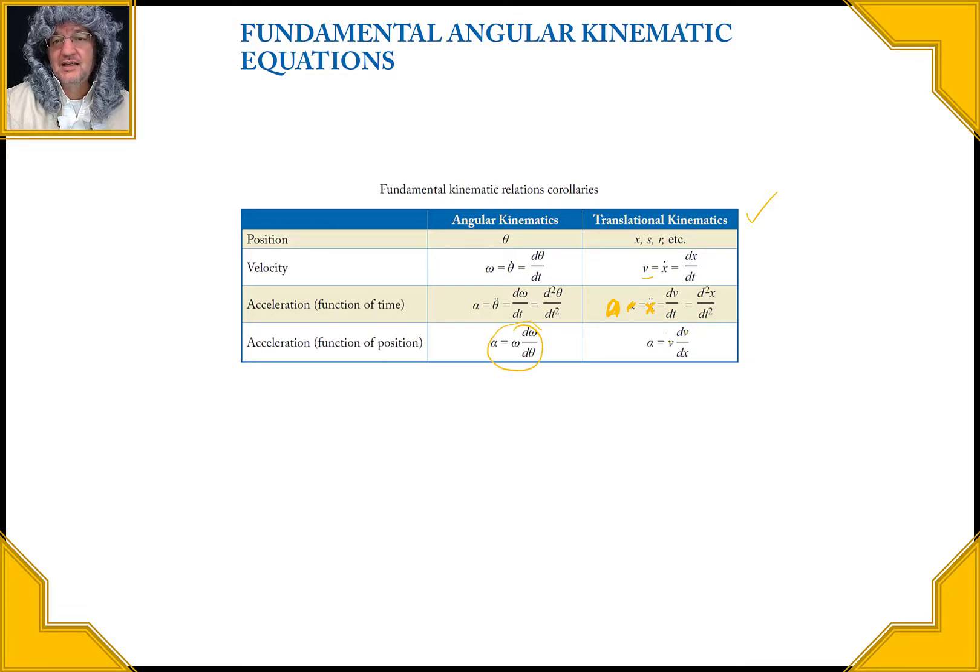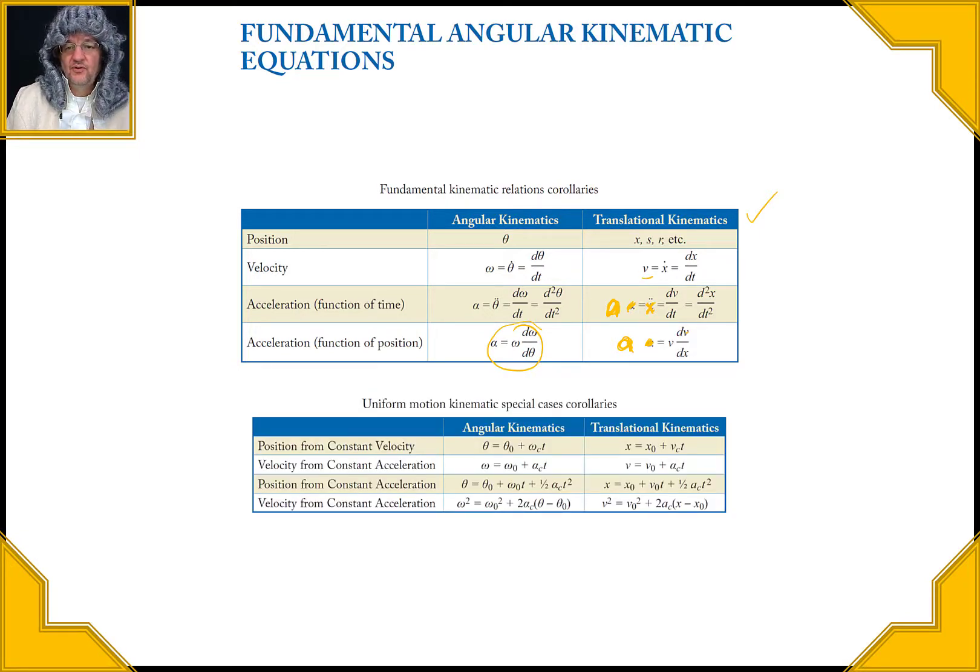dv dt or the second derivative of position x with respect to time. And then we have alpha equals omega d omega d theta, right, this is like the wild card one right here. So for uniform special cases, right, this is for uniform motion right here. If we have the angular one right as we just already mentioned, and here's the translational one, you can kind of see how they're related. Let's see if we could find any other mistakes in there. Now they had them written out, looks like correctly in here.